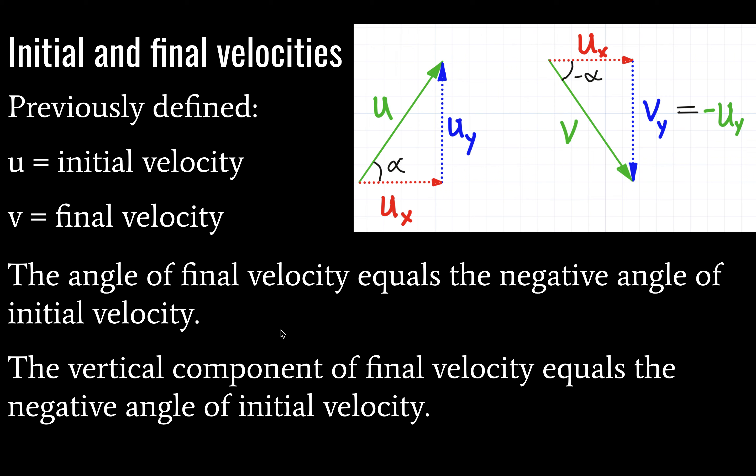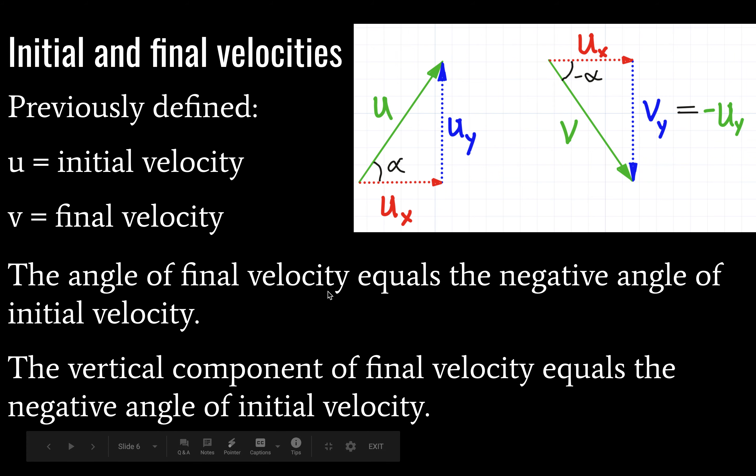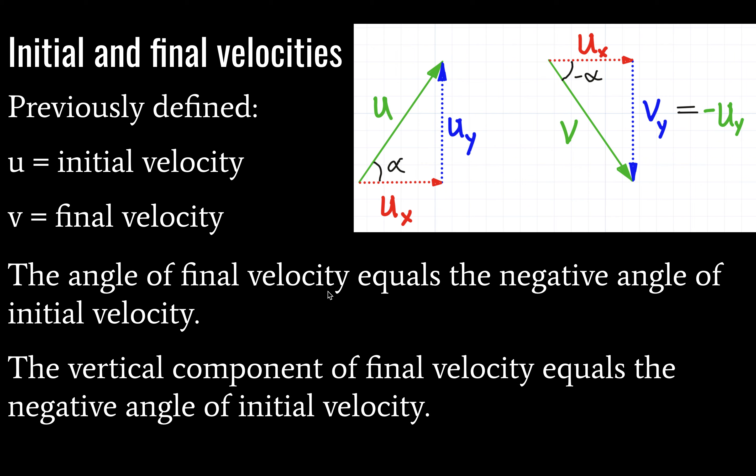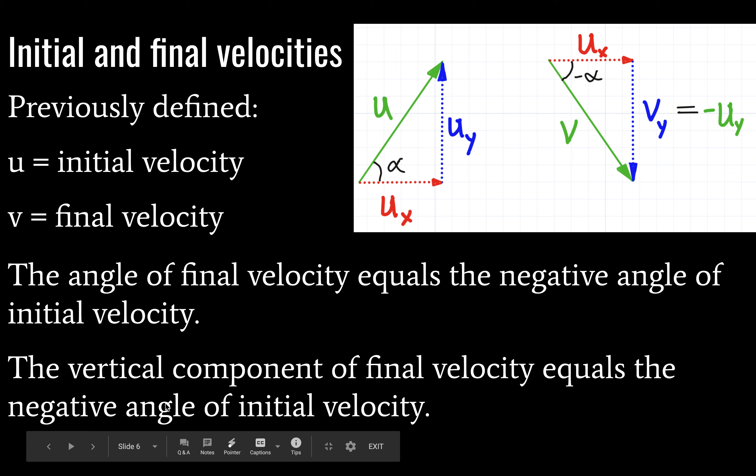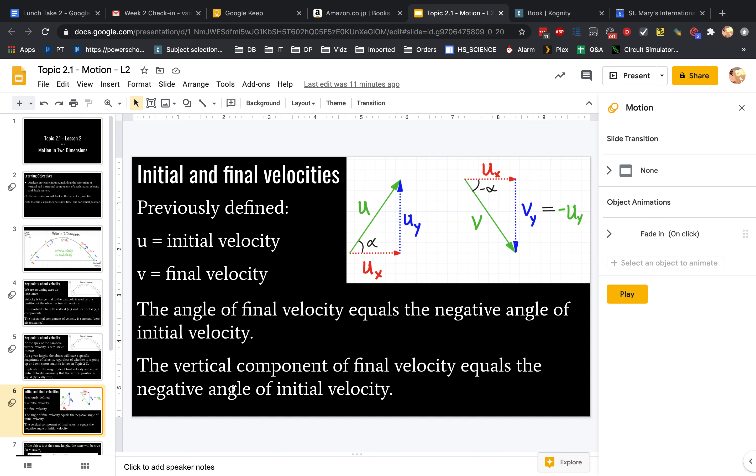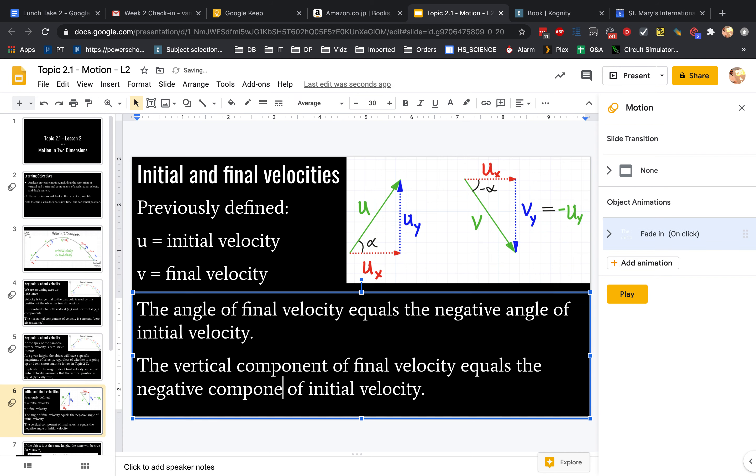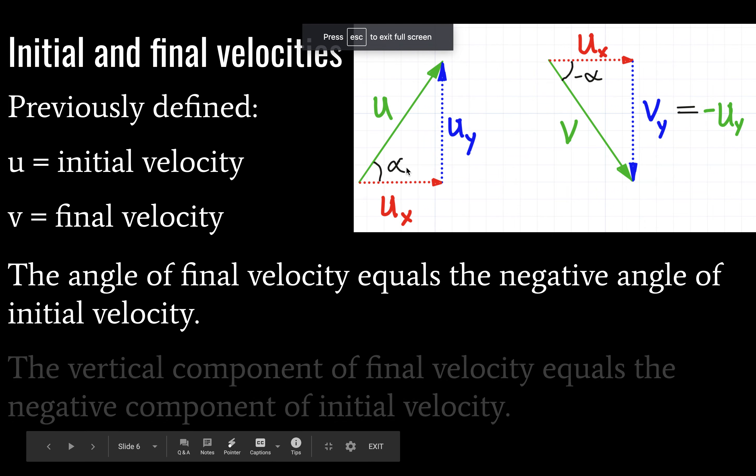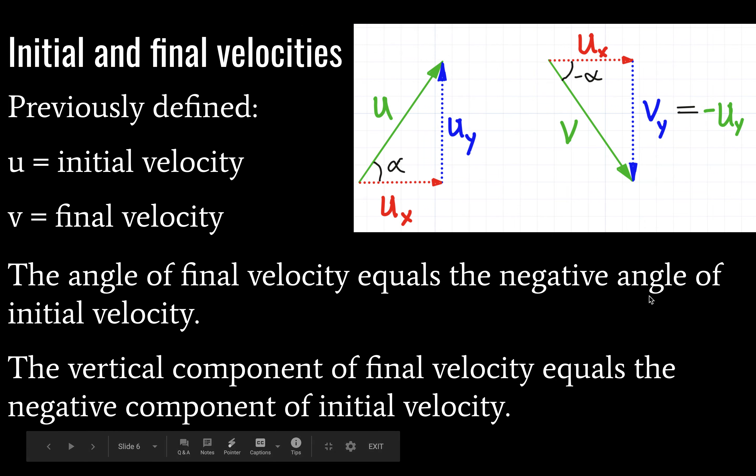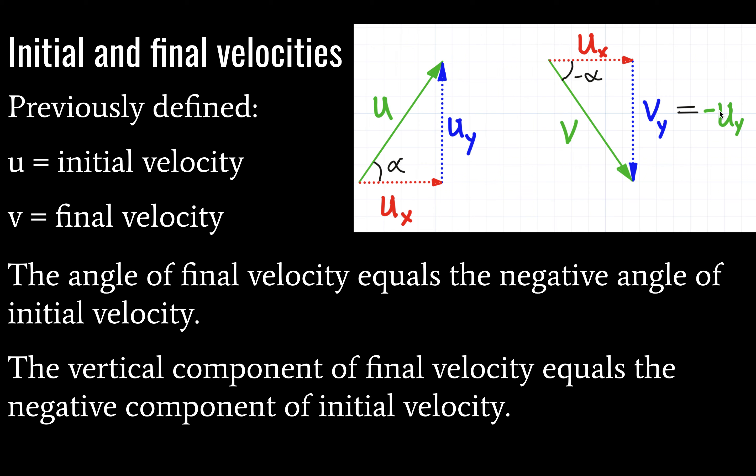Another key point about initial and final velocities. The vertical component of final velocity is equal to the, I'm sorry, that should be negative component of initial velocity, not angle. I will have to fix that. Actually, I'm just going to do it now. There you go. It never happened. Yes, we will pretend that did not happen. So the vertical component of final velocity is equal to the negative component of initial velocity. What that means is that V sub Y is going to be equal to negative U sub Y.